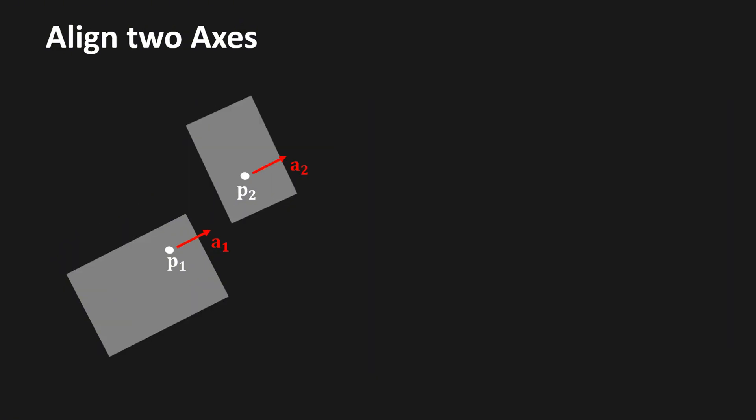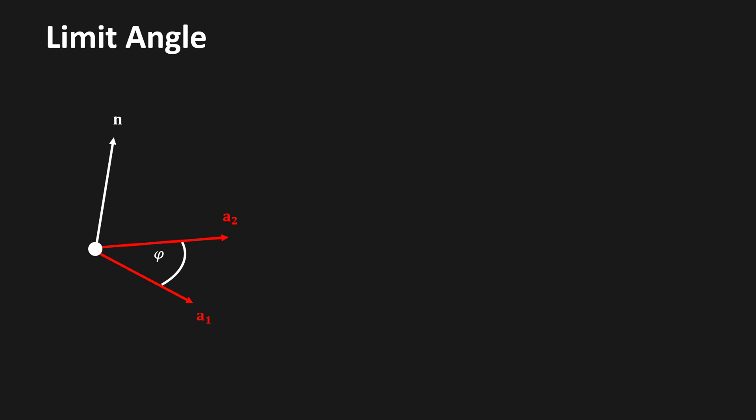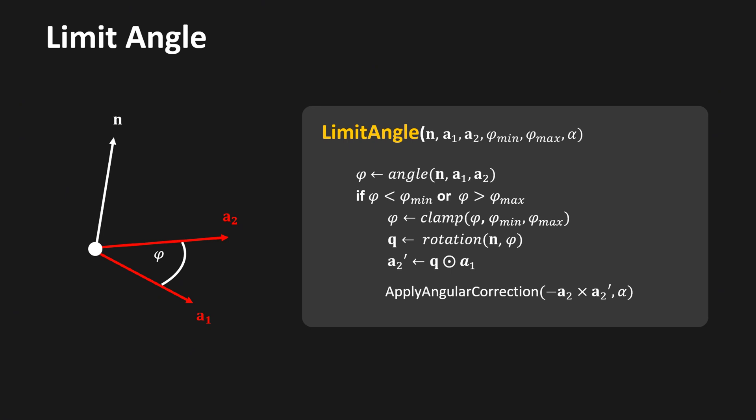The third procedure aligns two axes a1 and a2 — the correction vector is simply minus a1 cross a2, a fast approximation for small angles. The fourth building block limits the angle between two axes a1 and a2, with a rotation axis given by unit vector n. We compute the current angle phi between a1 and a2 with respect to n; if it is within bounds we do nothing, otherwise we clamp phi based on the limits. We then compute a2-prime by rotating a1 by angle phi, and apply an angular correction to rotate a2 into a2-prime.